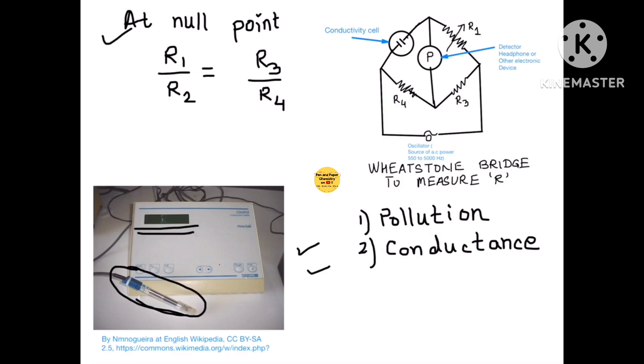So at null point R1 by R2 is equals to R3 by R4. I hope this clears the concept and this also completes the topic of electrochemistry. Now the only thing left on your part is probably find out two more ways where the conductivity meter or conductivity measurement is used. Happy studying to all of you. Stay subscribed because we are very soon going to start a new topic.